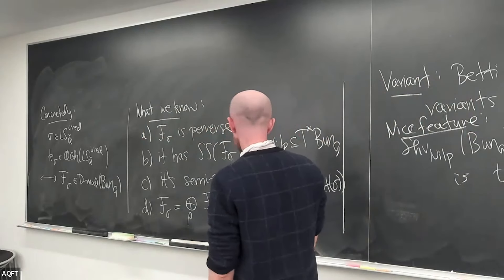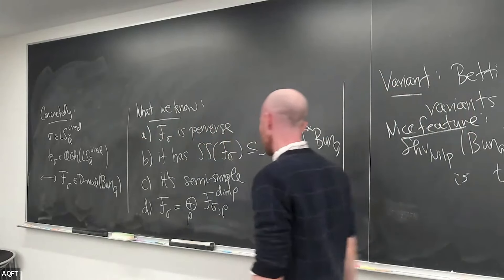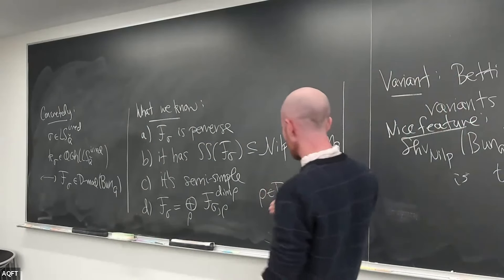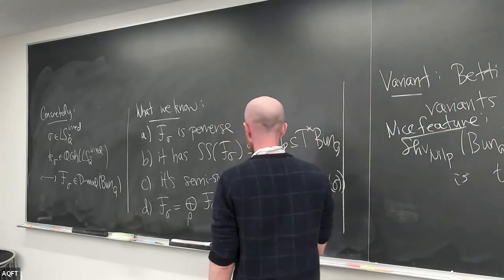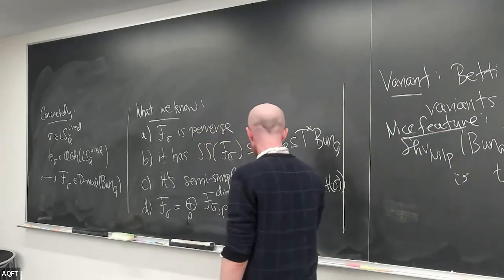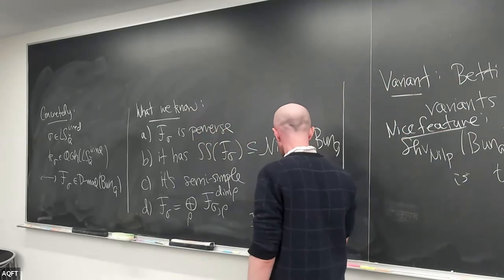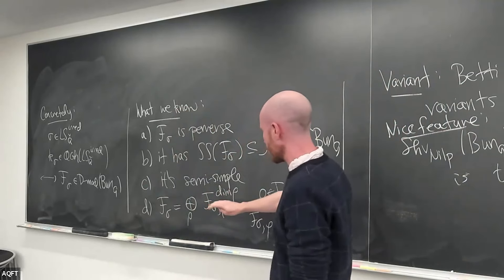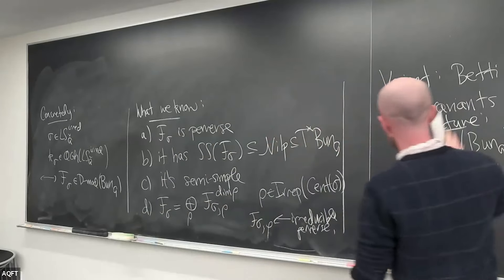F-sigma is going to be a direct sum of terms F-sigma-rho to the dimension of rho, where rho is an irreducible representation of the centralizer of sigma. So I think of sigma as a representation of pi_1 of X into G-check, and take the centralizer in G-check. For GL_n, that would always be just the center because sigma is assumed irreducible, but for other groups — even the dual group PGL_n — the centralizer can be slightly bigger by a finite group. The key property is that this F-sigma-rho is actually irreducible, and this whole thing has a very nice similarity to the behavior of L-packets in the arithmetic setting.